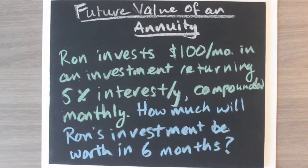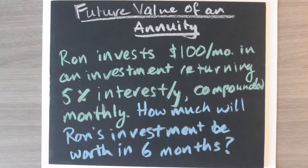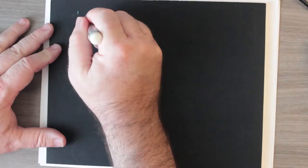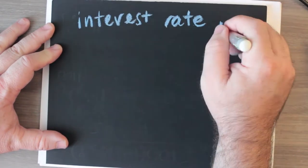The future value of an annuity. Ron invests $100 per month in an investment returning 5% interest per year compounded monthly. How much will Ron's investment be worth in six months?